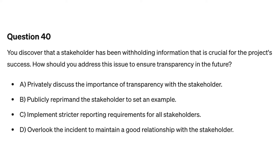Question forty. You discover that a stakeholder has been withholding information that is crucial for the project's success. How should you address this issue to ensure transparency in the future? A. Privately discuss the importance of transparency with the stakeholder. B. Publicly reprimand the stakeholder to set an example. C. Implement stricter reporting requirements for all stakeholders. D. Overlook the incident to maintain a good relationship with the stakeholder.